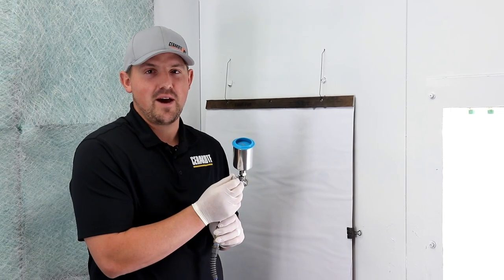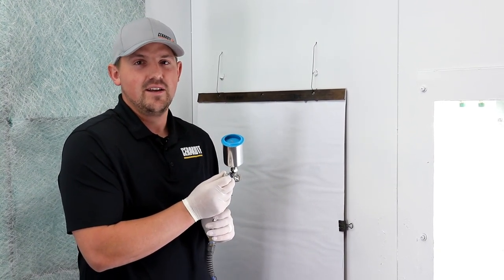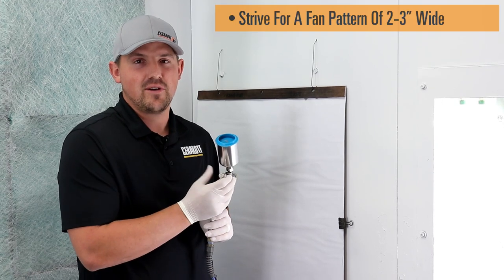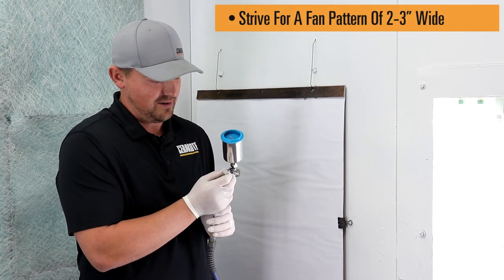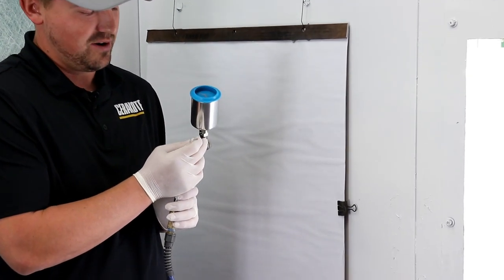First is the fan pattern adjustment. Depending on the size of the part that you're spraying, you're going to look for a fan pattern right around two to three inches wide. Start by turning that fan pattern out about one to one and a half turns.